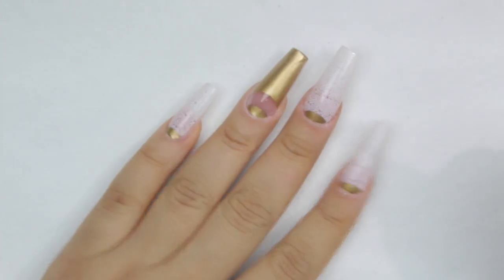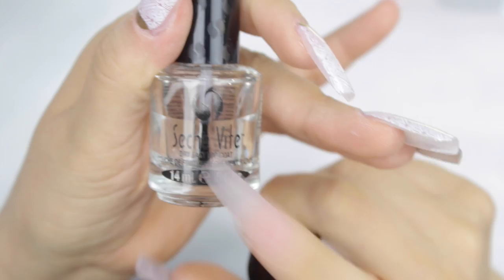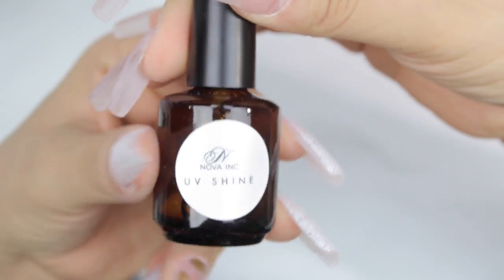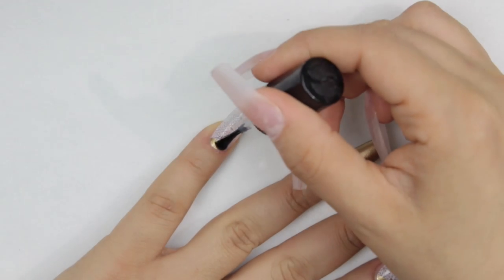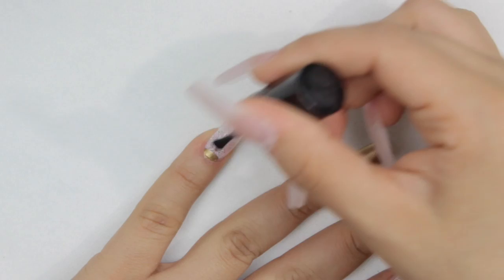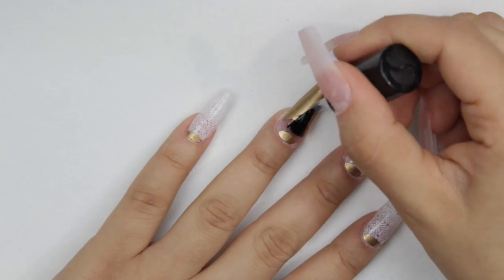You just file off with that little file, and that's it. So easy and practical. You can put UV gel top coat or just regular top coat. This is the UV Shine from Nova Ink. I decided to put regular top coat so I can show you guys how to remove it.